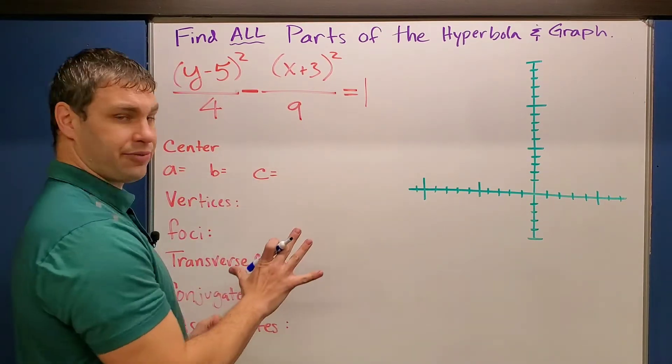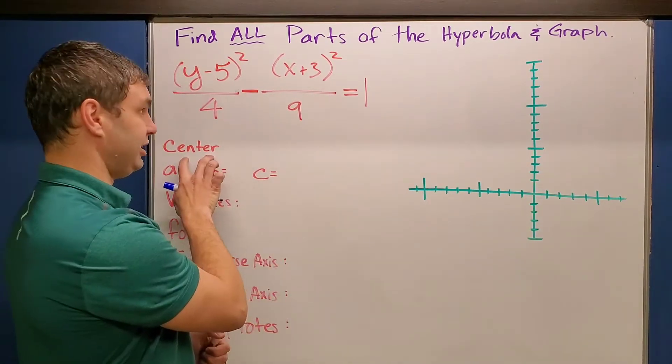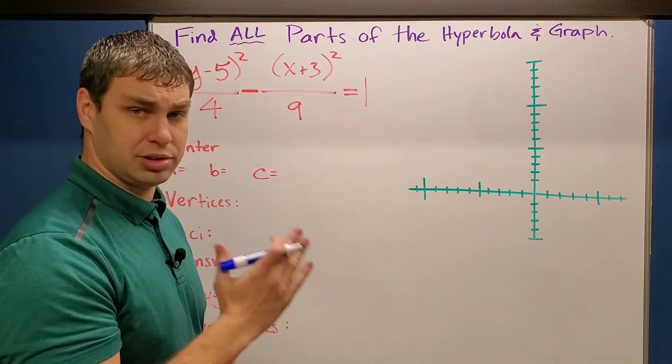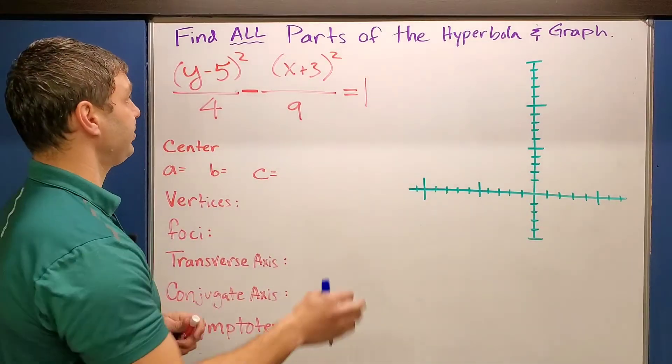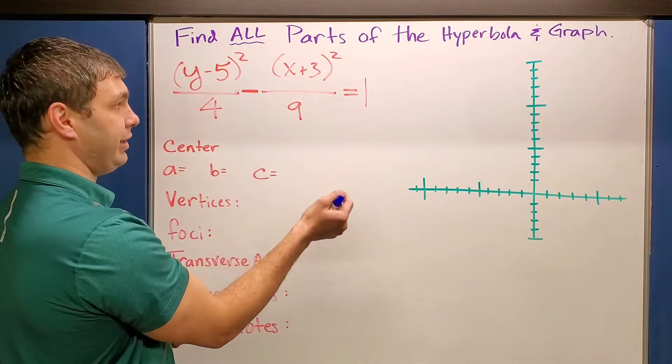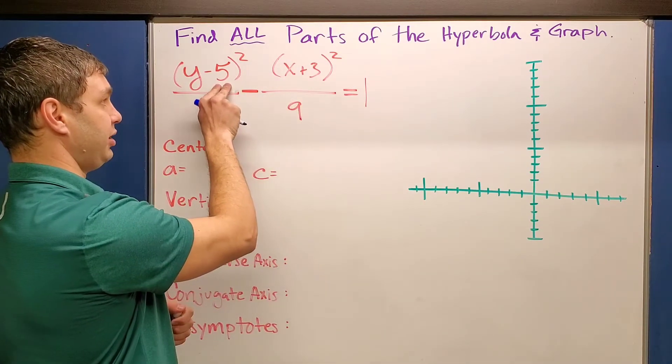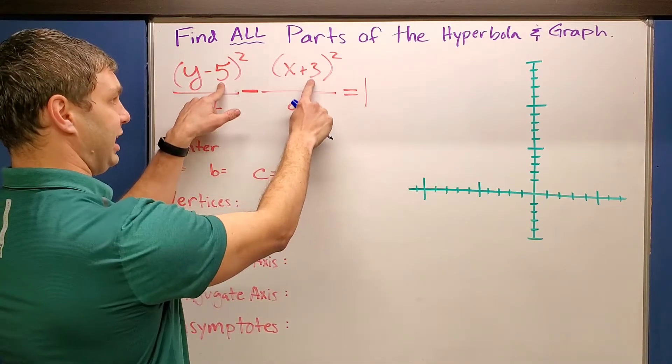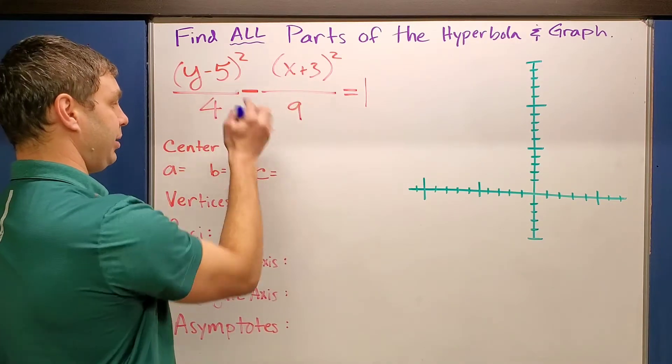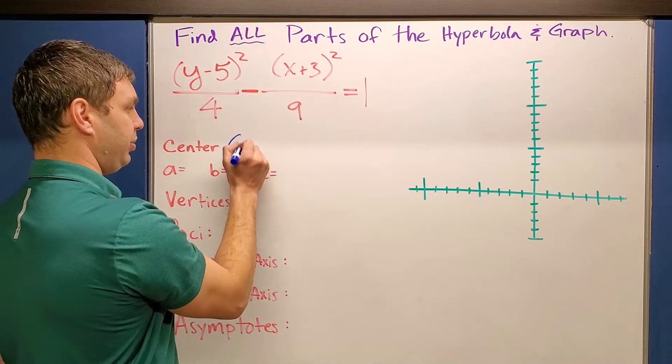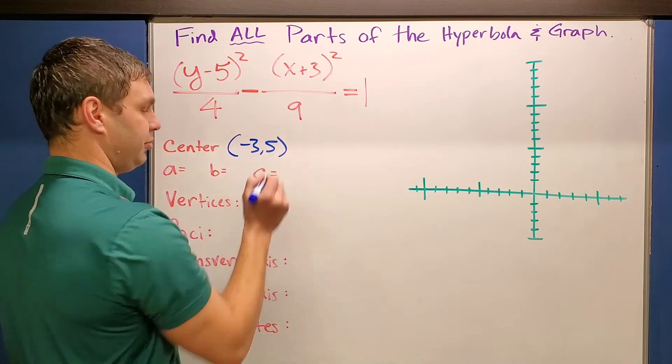What we need to start out first with is finding our center. The way we do that, just like we have with circles, parabolas, and ellipses thus far in our conic section unit, is with our h and k value. The h is with the x, the k is with the y. And the way I remember is we use the opposite sign. So I'm going to use negative 3, positive 5 as the ordered pair for my center.